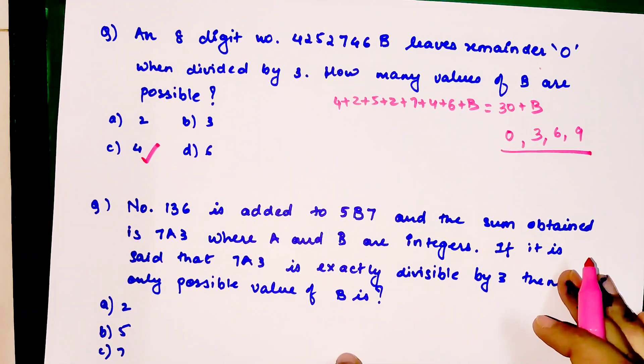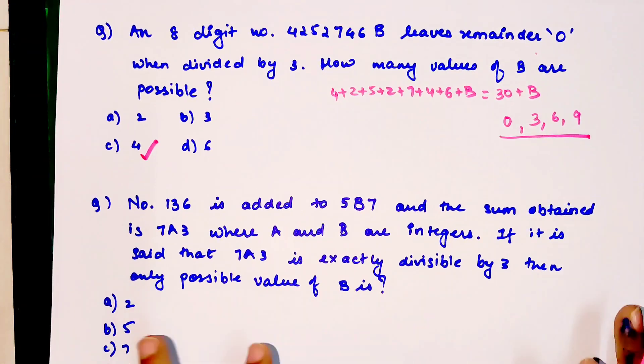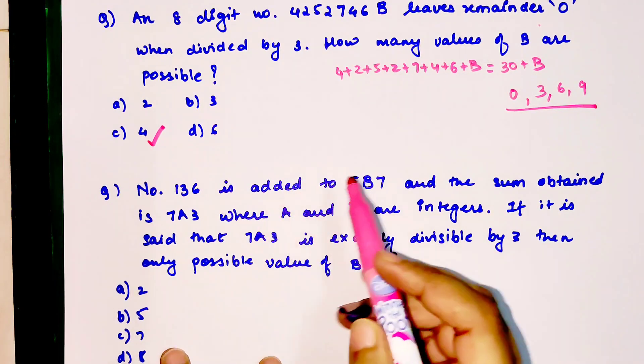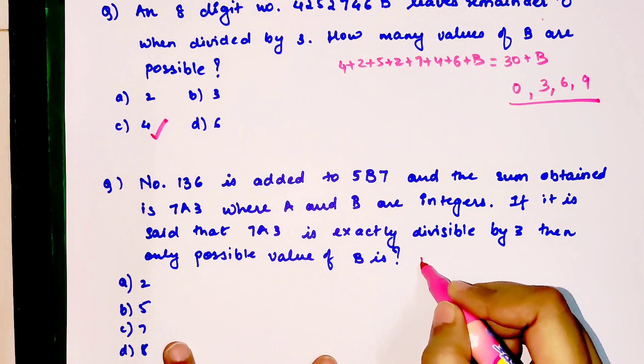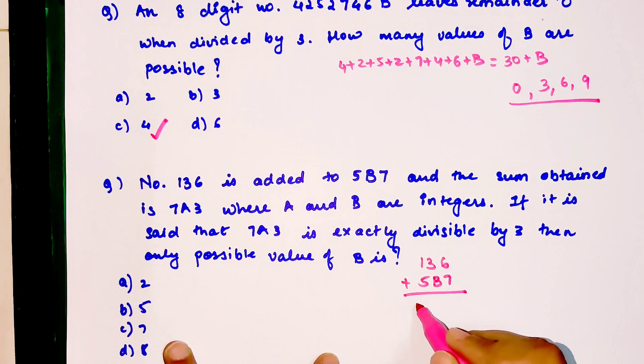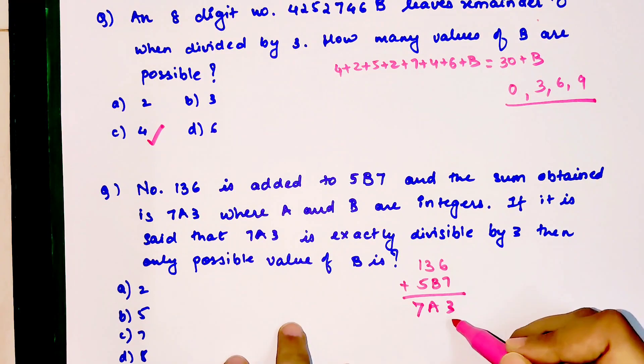This is an interesting question. Number 136 is added to 5B7, and the number obtained is 7A3.